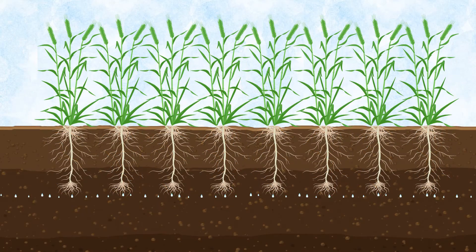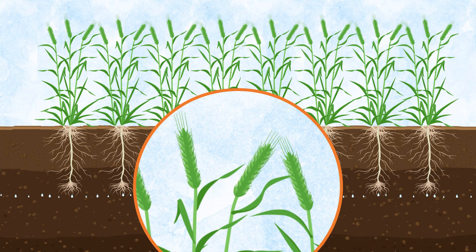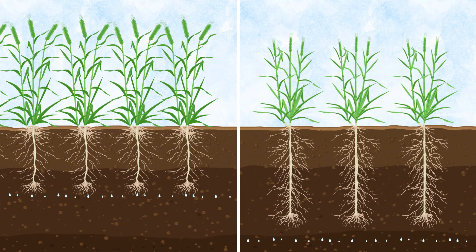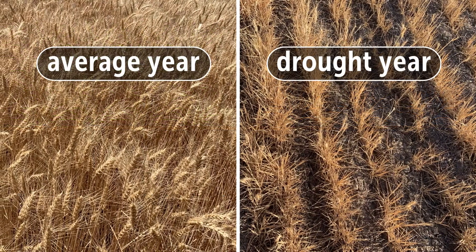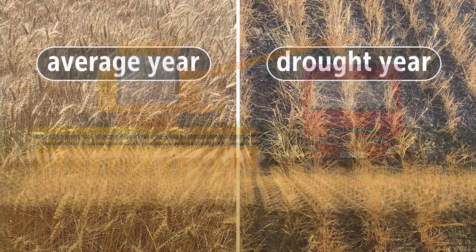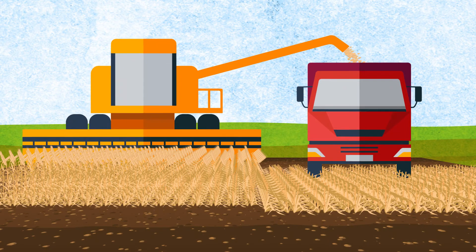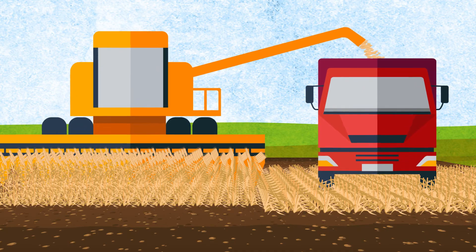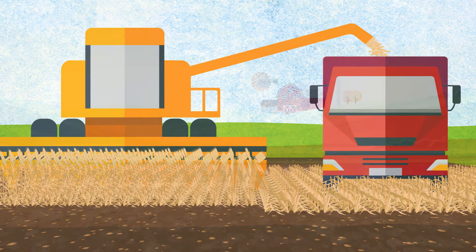During an average year, the wheat plants grow big plump heads and the plants stay green for a while. During a drought, when the plants have gotten very little water to drink, the plants have tiny heads and the leaves are thin. During a drought, the wheat plants ripen faster and turn yellow quickly. Here are photos of a Washington wheat field during an average year and one during a drought. Once the wheat plant is ripe, it is ready to be harvested. Farmers use a big machine called a combine to cut and separate the kernels from the stalk and the leaves.